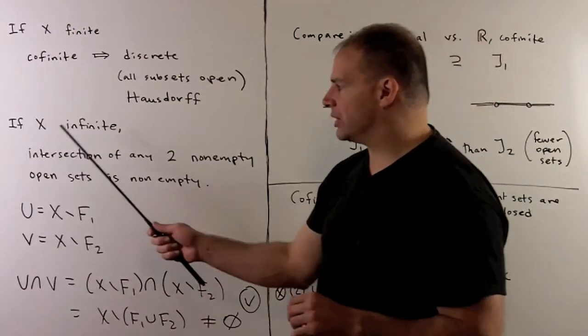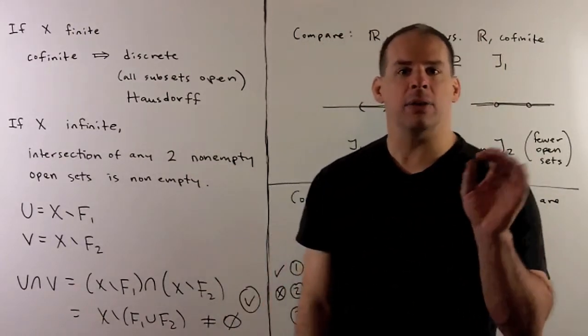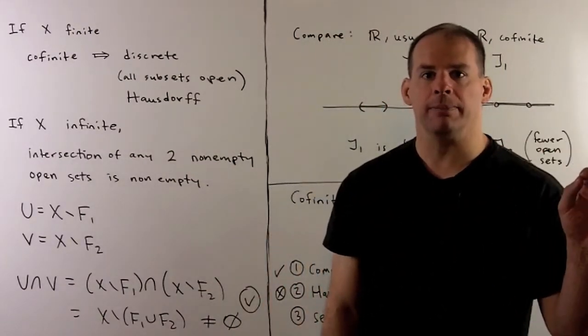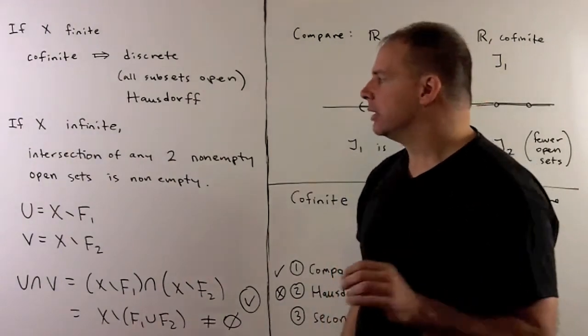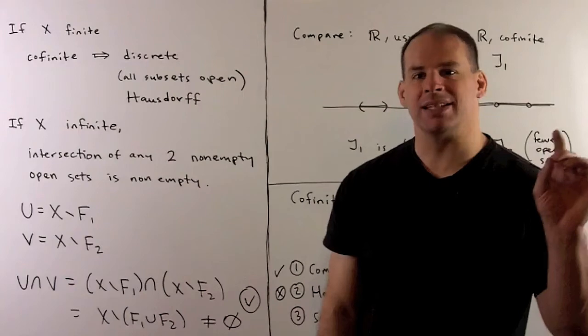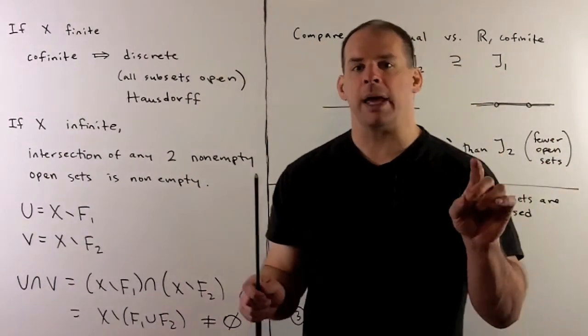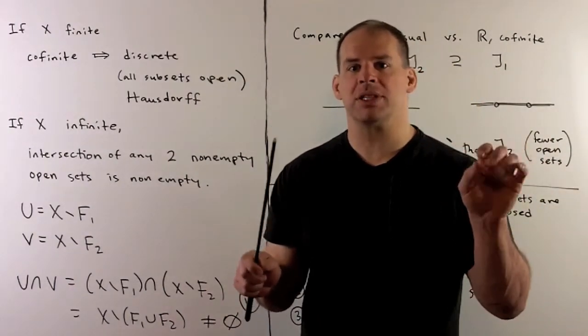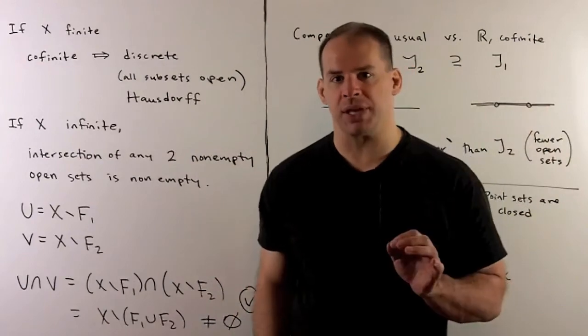Otherwise, if our space is infinite, then we'll lose the Hausdorff property. In fact, we'll show the intersection of any two non-empty open subsets is non-empty. So we're unable to separate any two distinct points by disjoint open subsets.